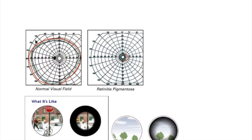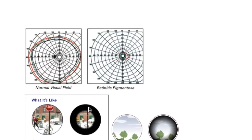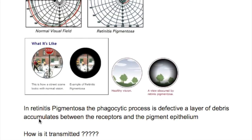Regarding the visual field: the normal visual field becomes constricted to the center in retinitis pigmentosa. This is known as tube vision or tunnel vision.